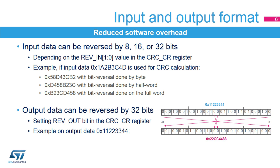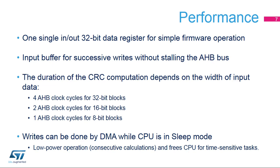The output data can also be reversed by setting the REV_OUT bit in the CRC_CR register. The operation is done at bit level. For example, output data 0x11223344 is converted into 0x22CC4488. The CRC data register includes an output buffer, which allows for immediate writes by the CPU or DMA peripheral of a second data word without waiting for wait states due to an active CRC computation. The CRC data register can be accessed by word, right-aligned half-word, and right-aligned byte.